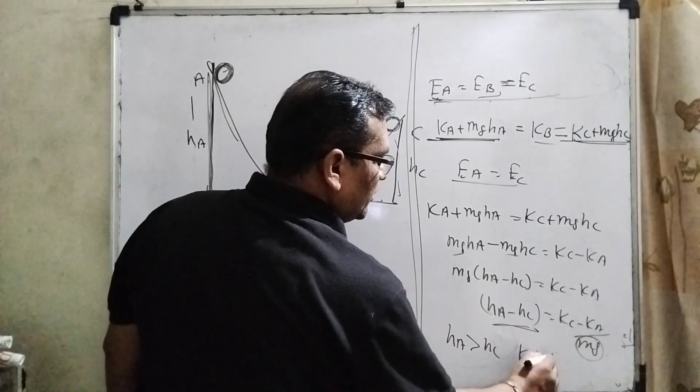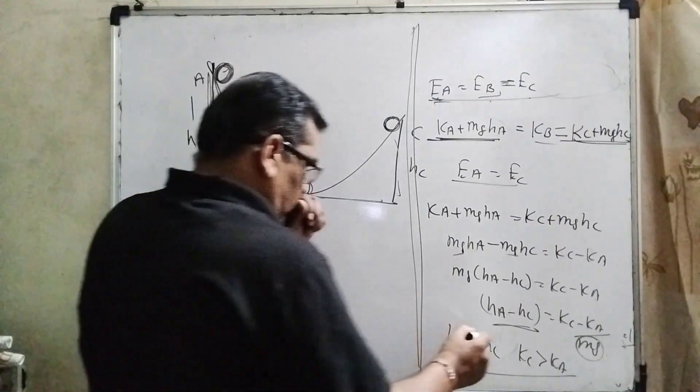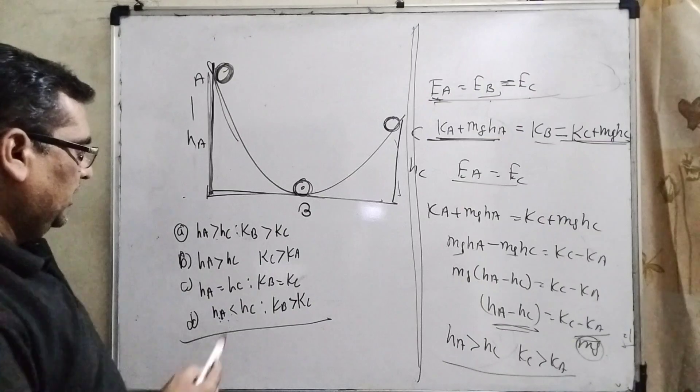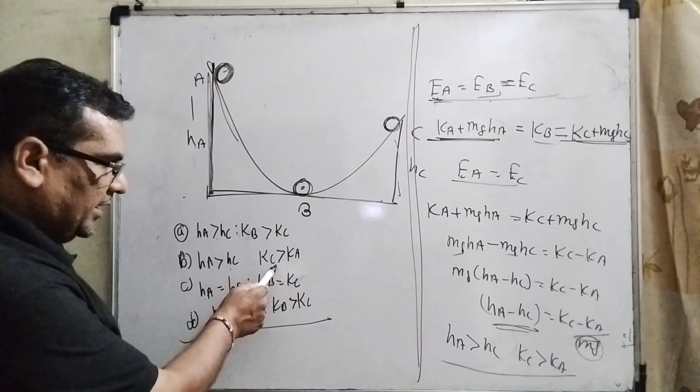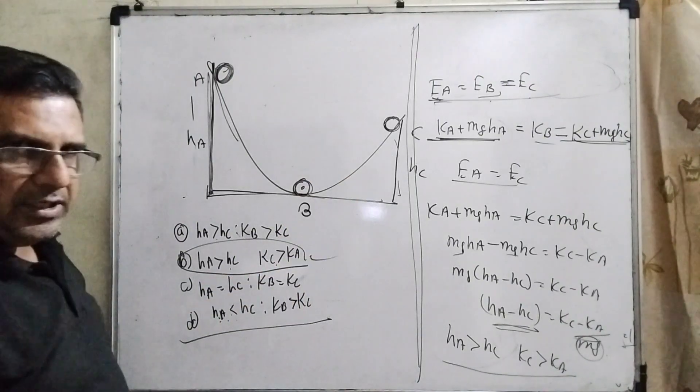Here, KC is also greater than KA, because it is in equal proportion. Now you can see that HA is greater than HC and KC is greater than KA. So this option is correct.